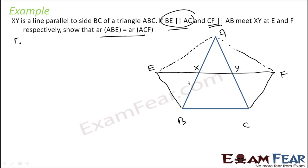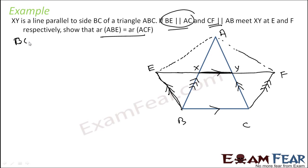If you take this from the other side, it is one line here and put the parallel here. You can see that area of triangle ABE — if you put the bottom area of this parallelogram BCYE, then BE is parallel to AC.